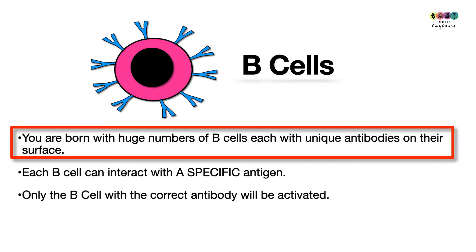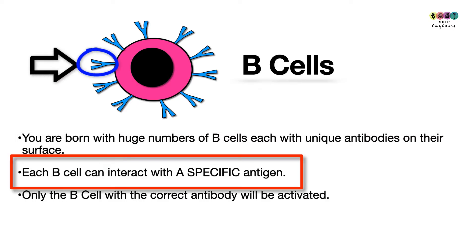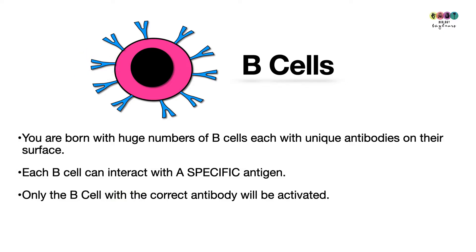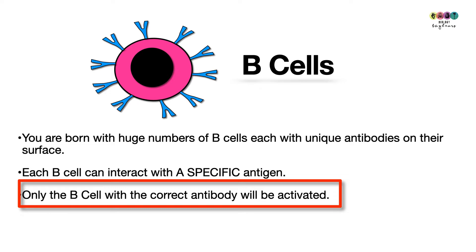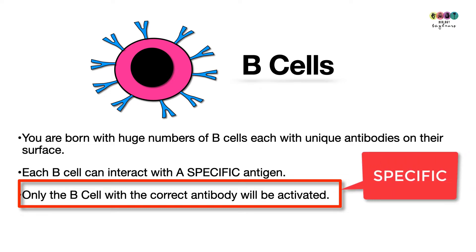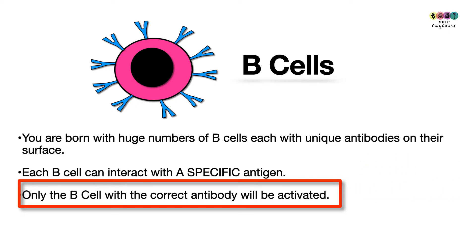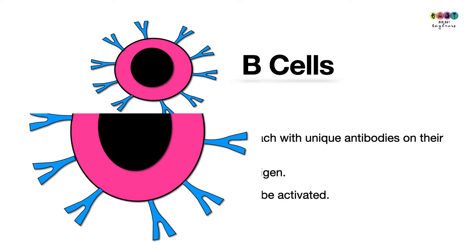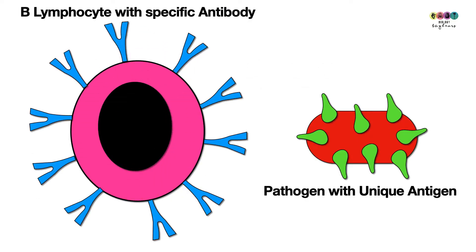Everybody is born with millions of B cells, and they are all different because they have unique antibodies on their surface. Antibodies are sometimes referred to as antigen receptors. Every antibody can only connect with one type of antigen, so they are very specific. Each B cell can only interact with a specific antigen, and only the B cell with the correct antibody will ever be activated.